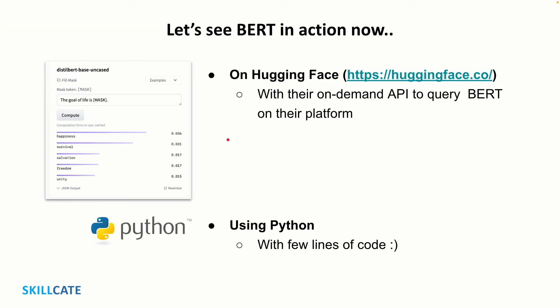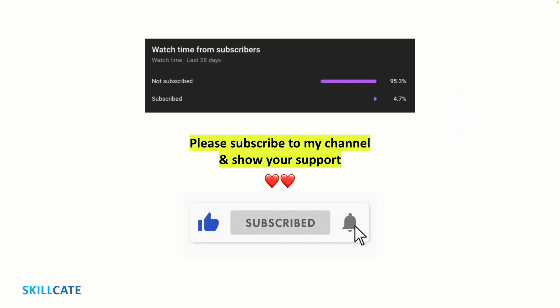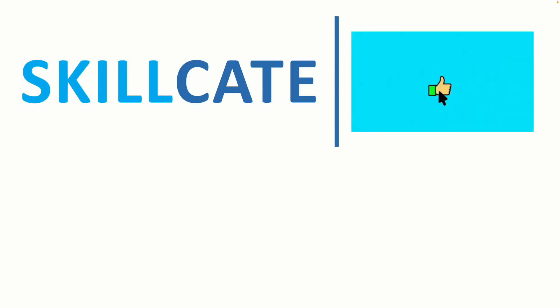With this, we have come to the end of part number two of our ongoing transfer learning series. Hope you are liking it so far. Do share your feedback or any queries in the comment section below and I'll be more than happy to answer. In the third part, we shall train our fake news detection model using the BERT pre-trained model as the base with transfer learning. I post new machine learning projects every week, so make sure to subscribe and press the bell icon so you get notified whenever a new project goes live. Happy learning!